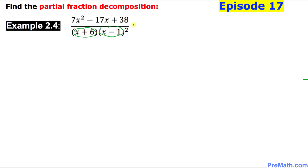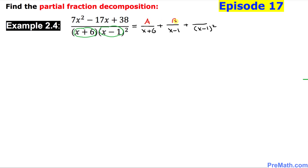So let's go ahead and write down the first fraction. For the first fraction I'm going to put x plus 6 in the denominator. For the second one, since it's repeating twice, I'm going to put down two more fractions: simply x minus 1, and the next fraction is going to be x minus 1 squared. The numerators are going to be constants: A for the first fraction, B for the second, and C for the third.